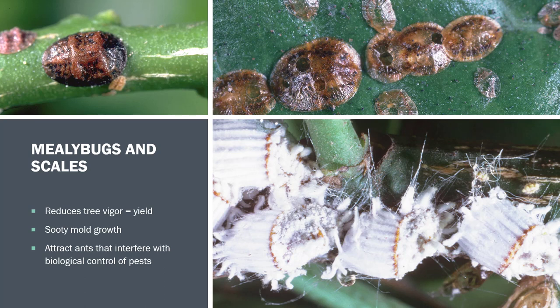Mealybugs and scales are another issue on citrus — like aphids, they can go from a couple to exploding in population very quickly. They reduce tree vigor and yield, and promote sooty mold growth that can inhibit photosynthesis. They also produce honeydew, which attracts ants that feed on it. Those ants can interfere with biological control of other insects by competing with beneficial insects, so pest populations get high. When people ask if it's bad to have ants on plants — it kind of is, because they disrupt the natural balance.